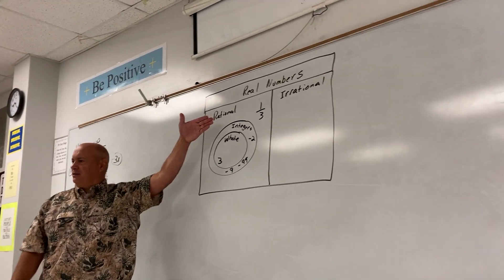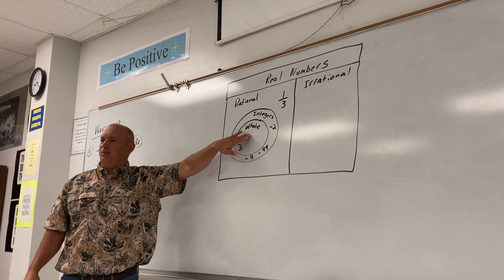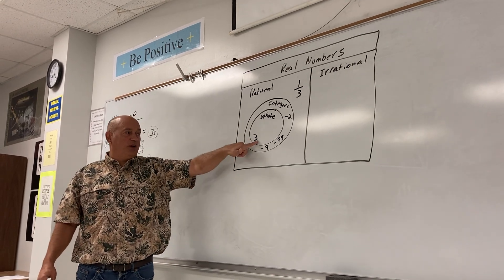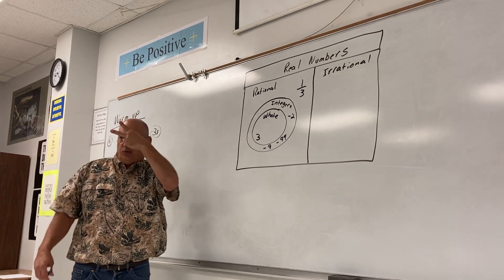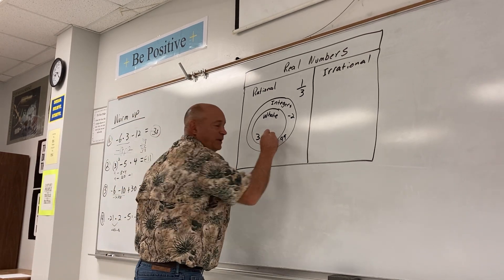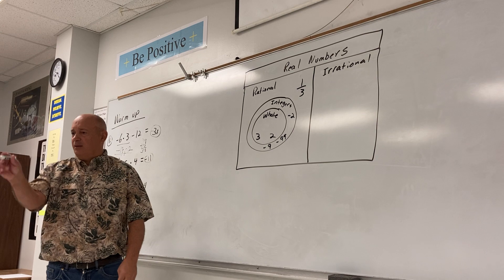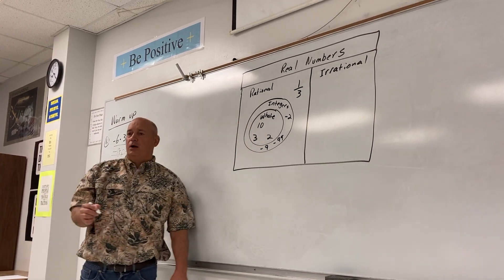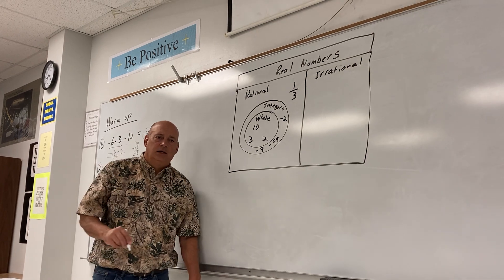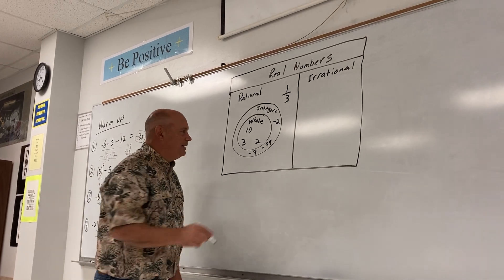Inside of integers, we have what we call whole numbers. We've already got one whole number in there. Give me another one. Haley? Two. Give me another one. Gabby? Ten. Give me one more. Josiah? Eighteen.